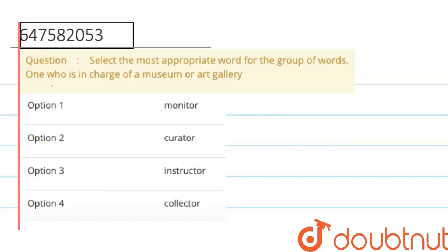Hello everyone, today's question is: Select the most appropriate word for the group of words. I have to basically substitute one word here. The statement is, one who is in charge of a museum or art gallery. What is in charge of a museum or art gallery? Let's just observe the options.